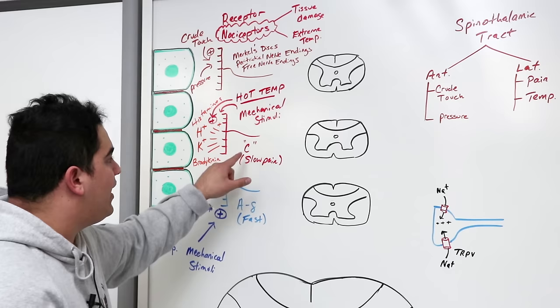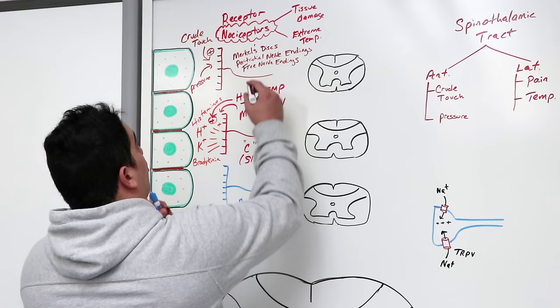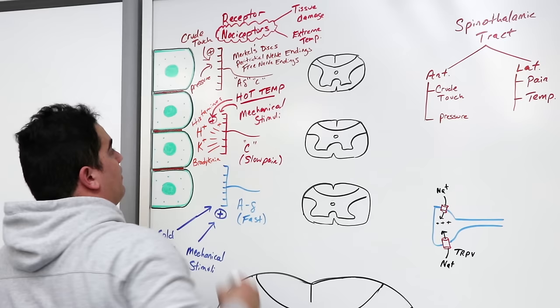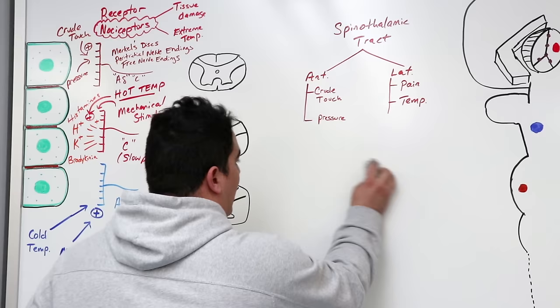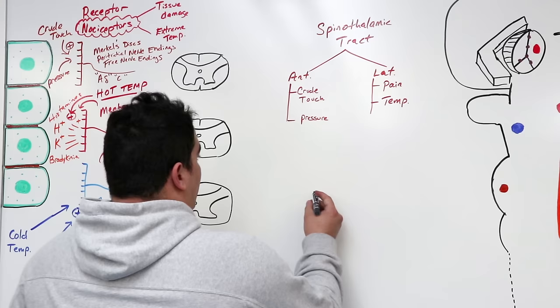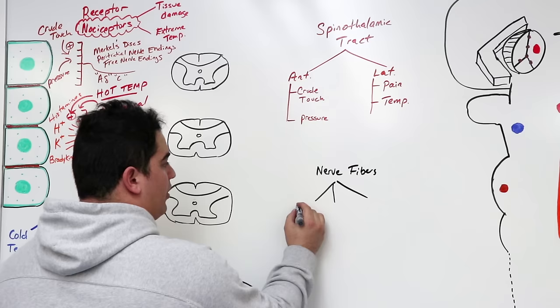Very quickly — why do they call these A-delta and C fibers? It depends on myelination. When we talk about nerve fibers, there are three types: A, B, and C. We're mainly focusing on A and C. A is highly myelinated, B is moderately myelinated — more for sympathetic and parasympathetic motor neurons — and C fibers are not myelinated.